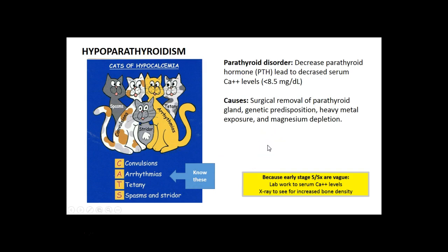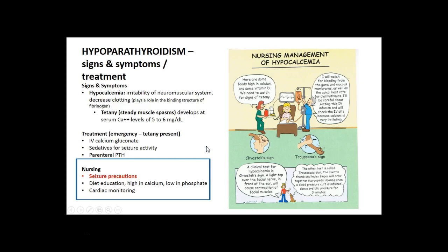Hypoparathyroidism focuses on low calcium levels. Signs and symptoms are the CATS of hypocalcemia: Convulsions, Arrhythmia, Tetany or tingling spasms, and Stridor. Know your ranges for high and low calcium levels. People with low calcium are at risk for seizures, so nursing interventions include seizure precautions, diet education — foods high in calcium and low in phosphate — and cardiac monitoring. Treatment when tetany is present includes IV calcium gluconate and sedatives for seizure activity.